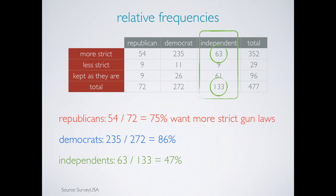Democrats are more likely than others, and Independents are least likely to want more strict gun laws. Since we're able to spot a trend, we conclude that there appears to be a relationship between opinion on gun laws and party affiliation for these San Francisco residents. If the relative frequencies were equal — so if it was equally likely for someone to want more strict gun laws regardless of their party affiliation — we would have concluded no relationship between the two variables.